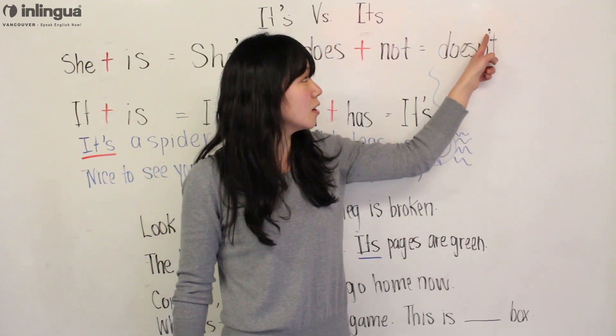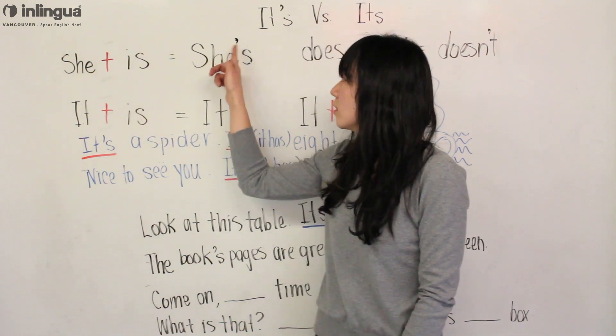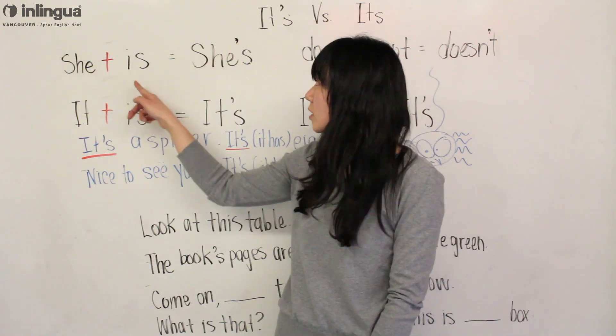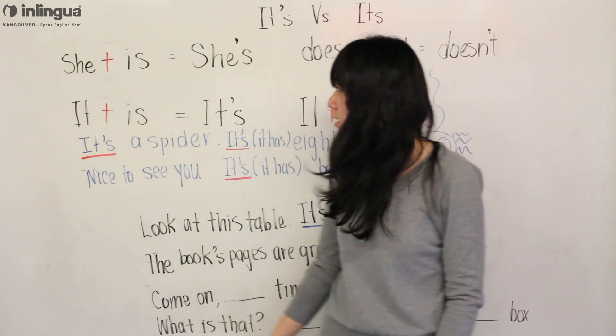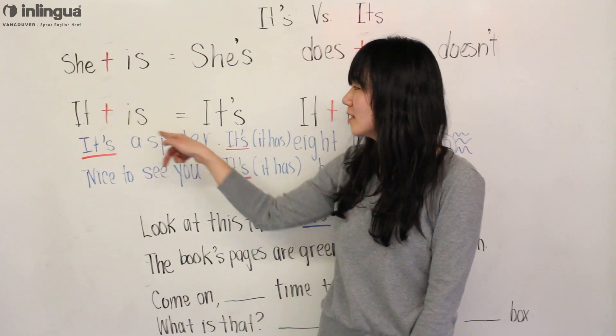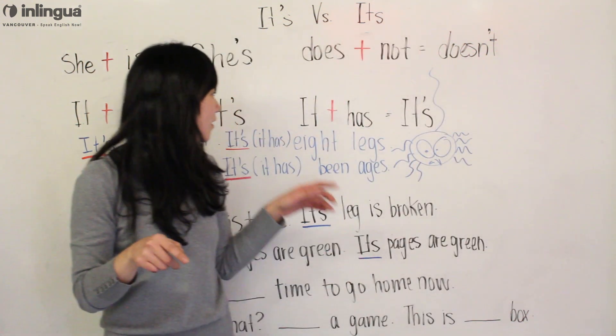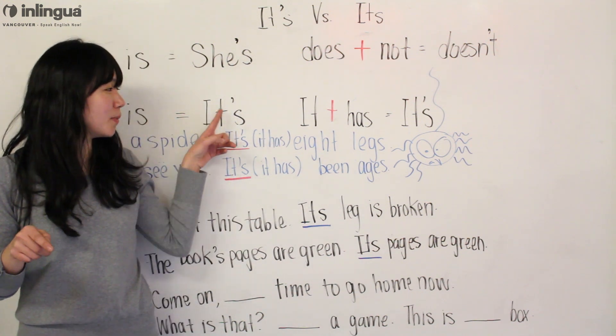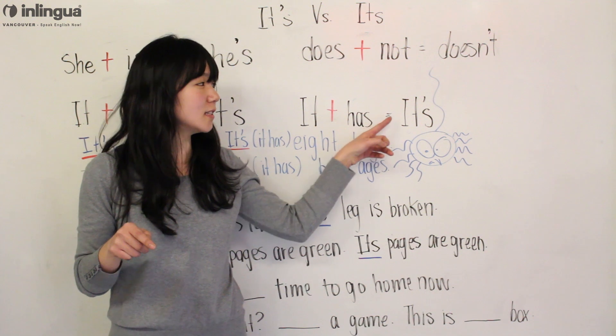So here, the apostrophe replaces the O, and over here the apostrophe replaces the I. So it's 'she's' and 'doesn't'. If you look at IT plus IS, it equals IT'S. If you look again, IT'S equals IT plus HAS is IT'S.